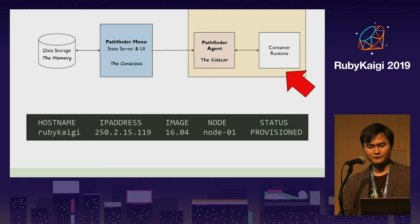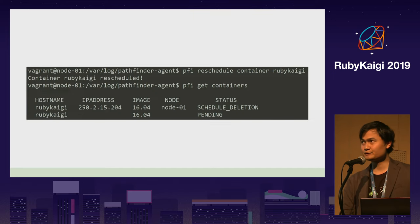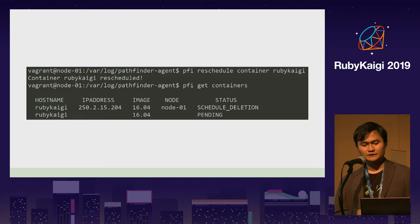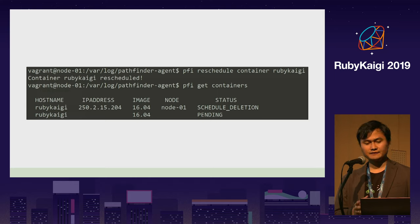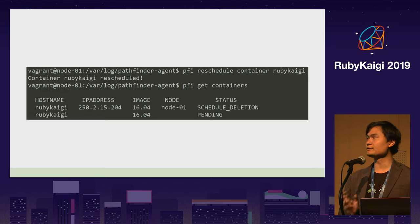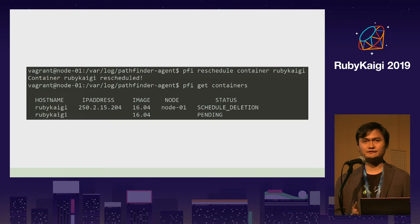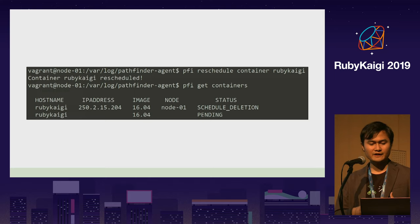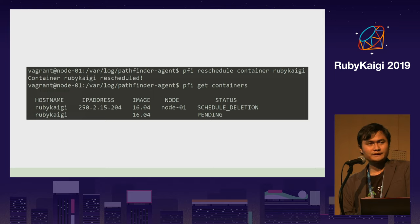After the scheduler assigns the container, it's the agent's turn. The agent also constantly polls the state server, and when it finds a scheduled container that hasn't been started yet, it pushes the information to the runtime. The runtime then starts creating the container in the worker node. If you check the CLI again, the containers will already be provisioned and will have their own IP address. There's also a reschedule feature — if you want to destroy a container on one node and move it to another, the scheduler will place it on the node with the least resources.